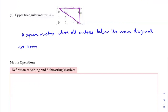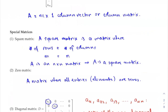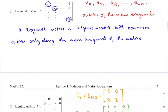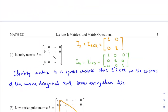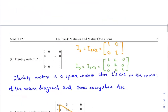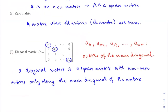We just went through some special matrices we'll see repeatedly in this course. First: the square matrix, where the number of rows equals the number of columns. Then the zero matrix, where all entries are zero. The diagonal matrix has non-zero entries only on the main diagonal. The identity matrix has ones on the main diagonal and zeros elsewhere. We also have the lower and upper triangular matrices — together with the diagonal matrix, these are called the triangular matrices.